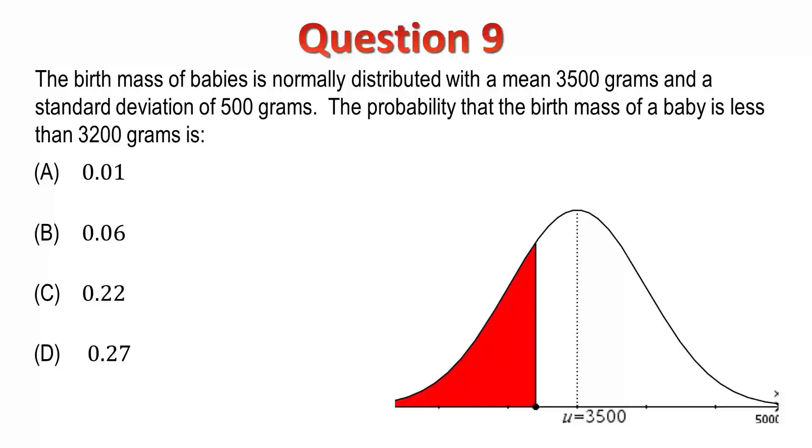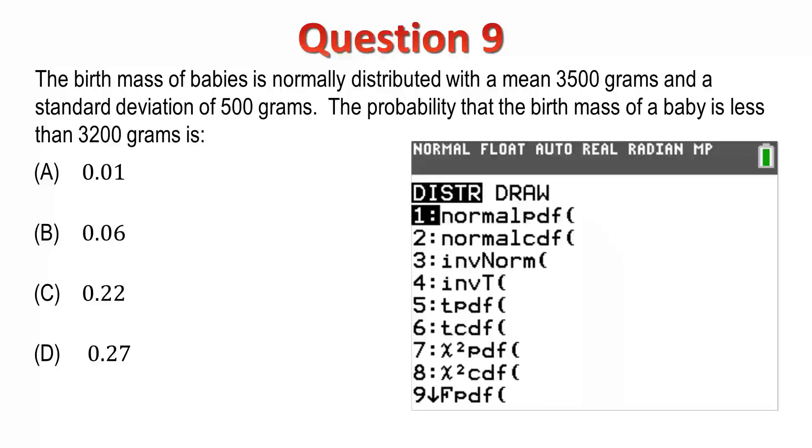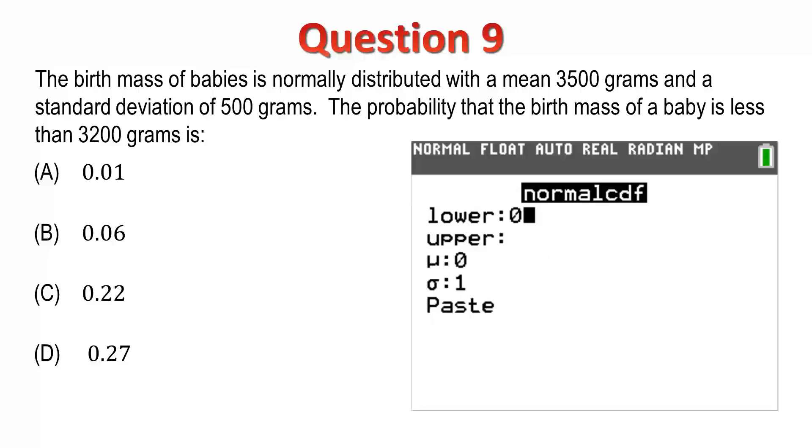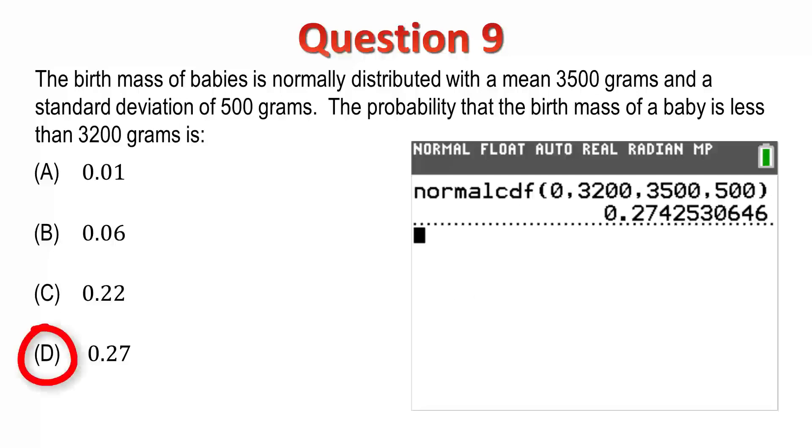Question 9. The birth mass of babies is normally distributed with a mean of 3,500 grams and a standard deviation of 500. We're required to find the probability that the birth mass of a baby is less than 3,200 grams. We can see our normal distribution, and the red shaded area corresponds to the area that we require. To calculate this probability, use the distribution menu and select Normal Cumulative Density function. Enter the lower bound, 0, the upper bound, 3,200, followed by the mean and standard deviation. We get a probability of approximately 0.274, which is option D.